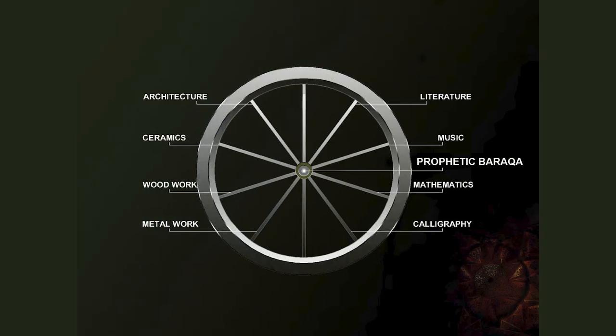If you take the prophetic baraka as the source and transform this wheel into the different components of Islamic art and architecture, you find a common link — things which originate in literature pass on to architecture, ceramics, woodwork. Calligraphy is one thing which links all Islamic art and architecture together.